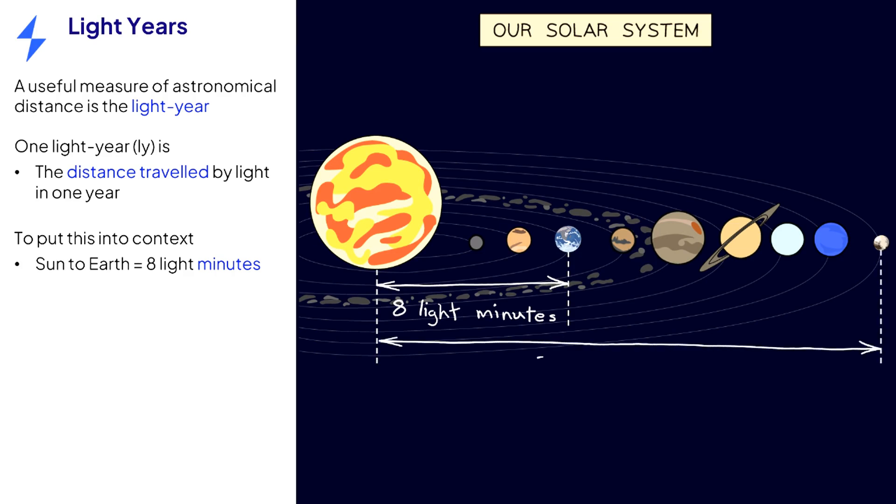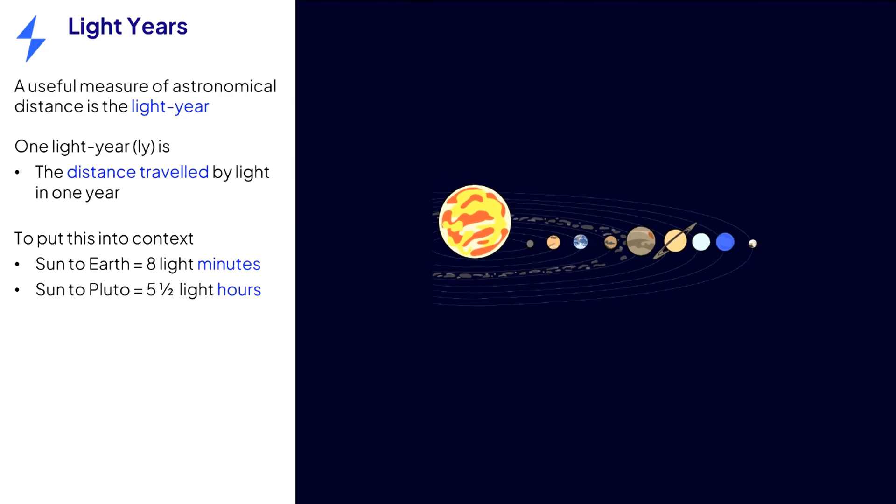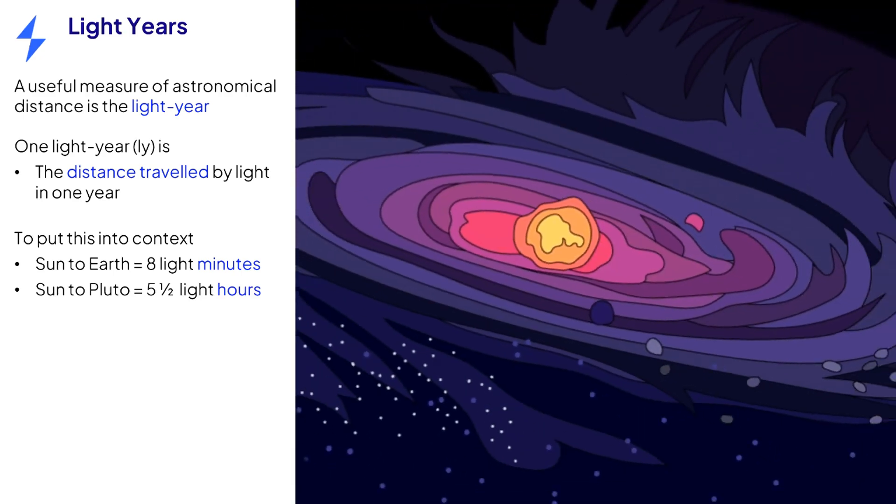Light from the sun takes five and a half hours to reach Pluto at the very edge of the solar system. Let's take a look at some larger distances on an interstellar scale.